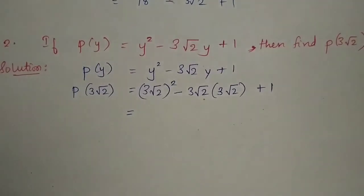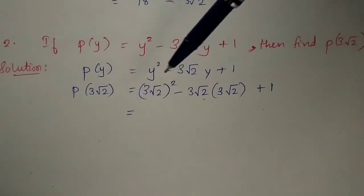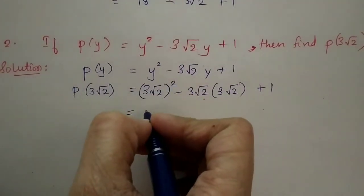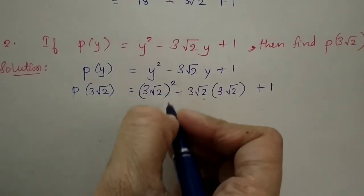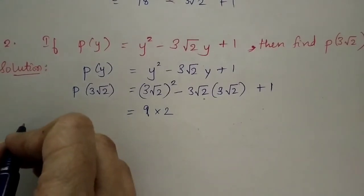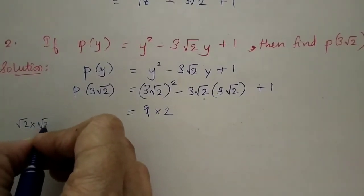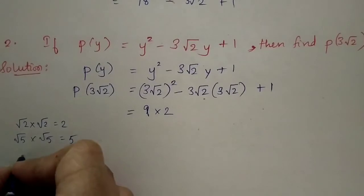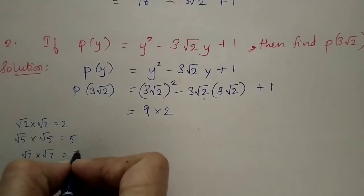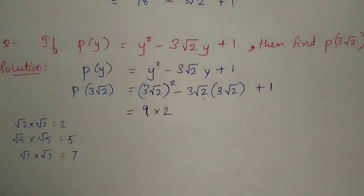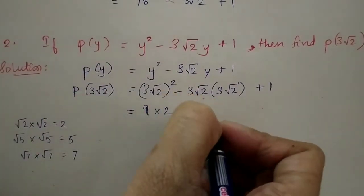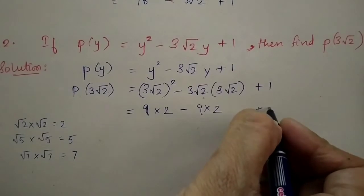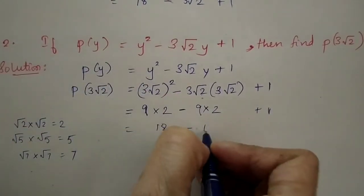Now we solve (3√2)². First, we take 3 and write the square of 3, which is 9. Then the square of √2 is 2 — always remember: √2 × √2 equals 2, √5 × √5 equals 5, √7 × √7 equals 7. So (3√2)² equals 9 × 2 equals 18. Similarly, for the next term, 3 squared is 9 and √2 × √2 gives 2, so that term is also 18.